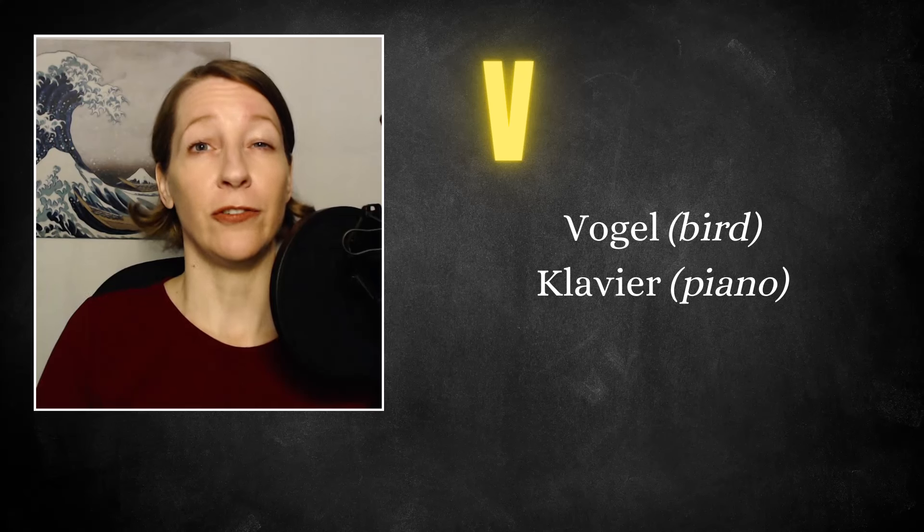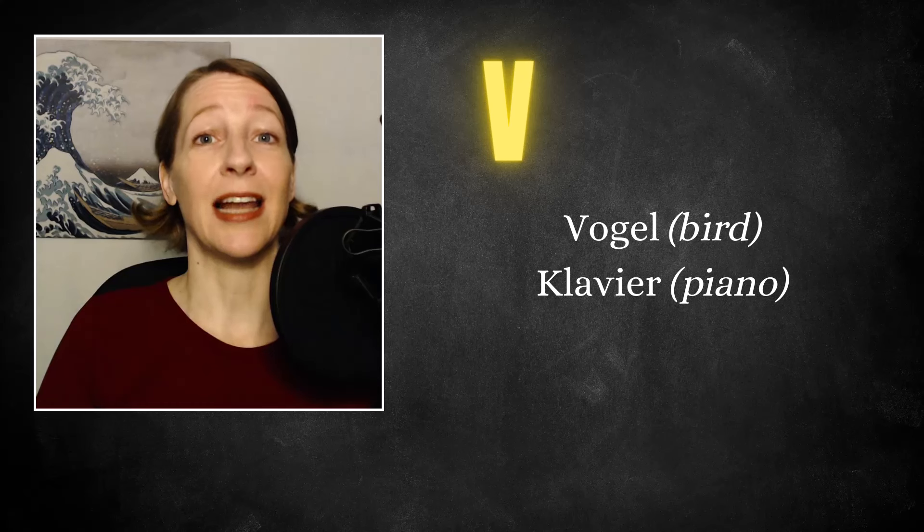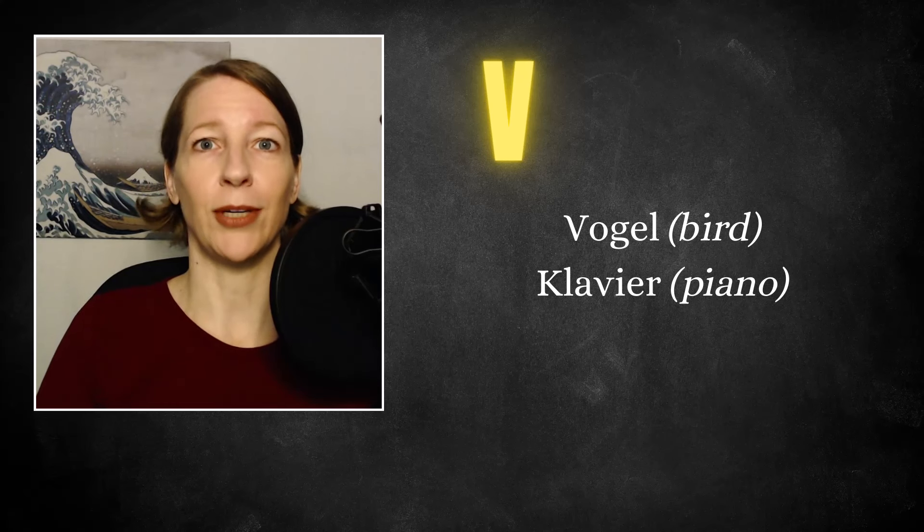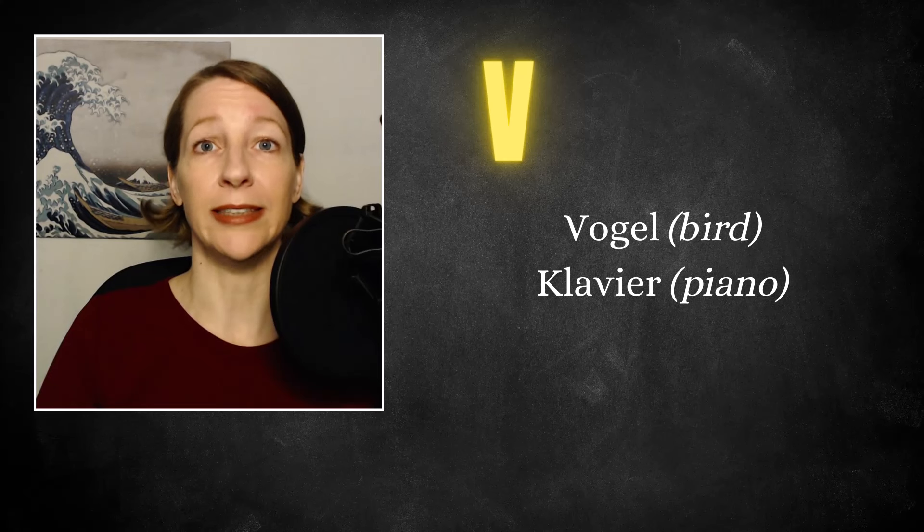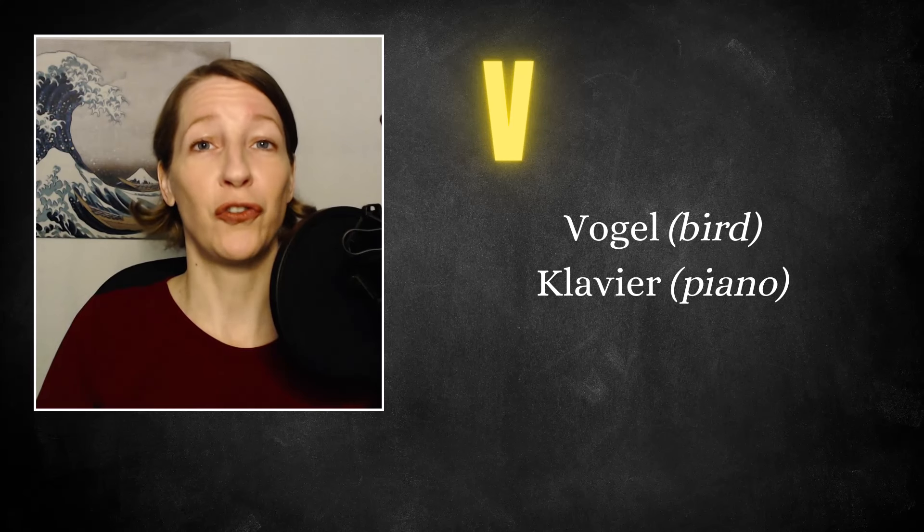The V is usually pronounced just like an F with some exceptions, usually words from other languages. And Klavier is such an example where we use the V like a W. Klavier. But most of the time, it's an F as in Vogel.